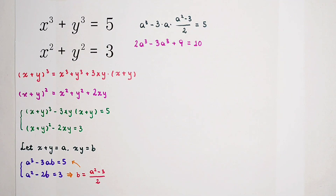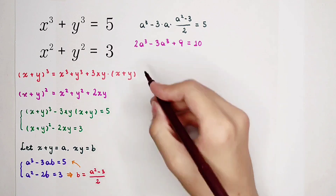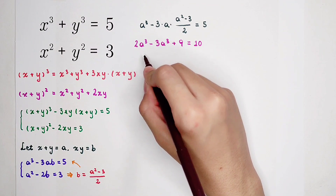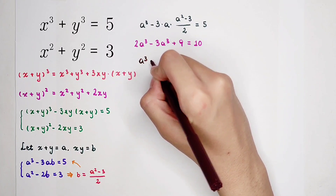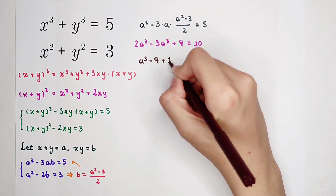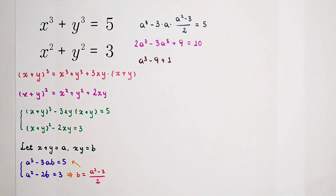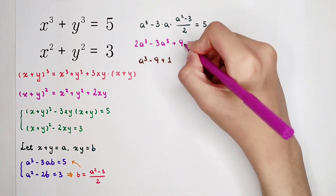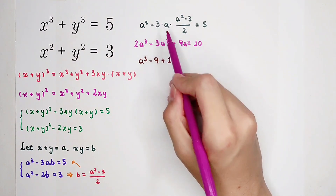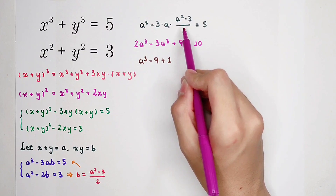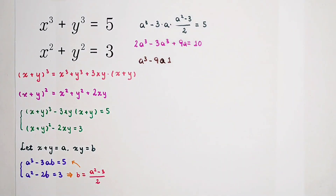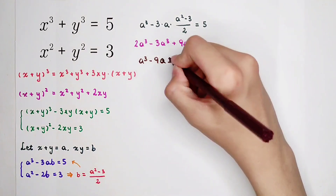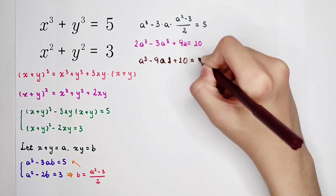Simplifying further: the terms combine to give minus a cubed plus 9a plus 9 equals 10. Then, don't forget the 9a term — 3 times a times 3 — please don't forget it. After simplification, we arrive at the cubic equation: minus a cubed plus 9a plus 10 equals 0.